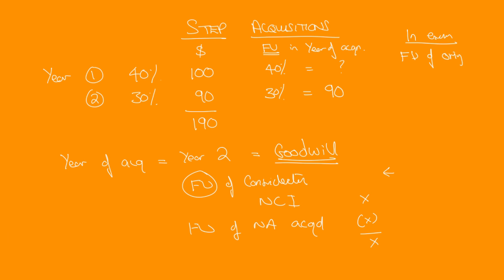So the examiner will tell you in the exam it will say something like the fair value of the original equity holding, which is basically what he's saying is the original 40%, is, let's say, 120. So the fair value of consideration in year two is 120, the fair value of 40% in year two, plus 90,